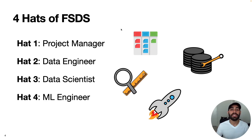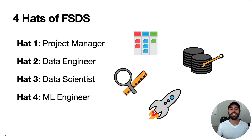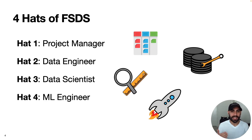That brings us to what I call the four hats of a full-stack data scientist, each corresponding to key parts of the machine learning workflow. Hat one is the project manager — diagnosing problems and designing solutions. Hat two is the data engineer — sourcing and preparing data. Hat three is the data scientist — training the machine learning model. And hat four is the ML engineer — deploying the ML solution.